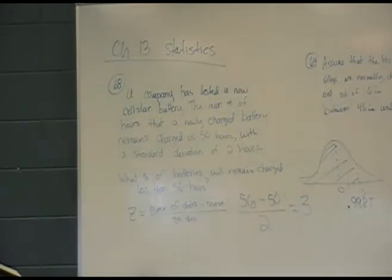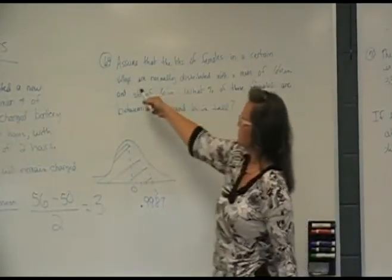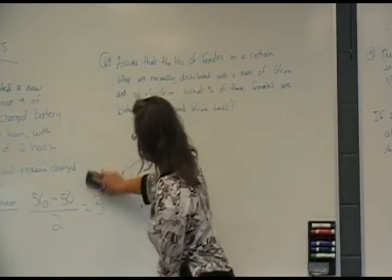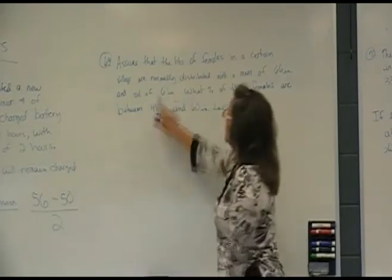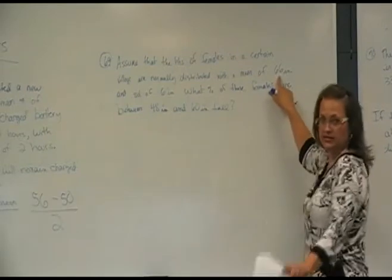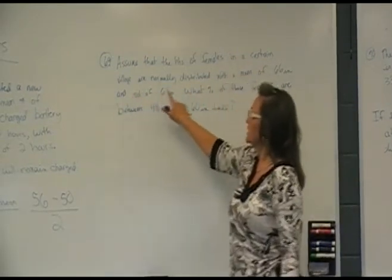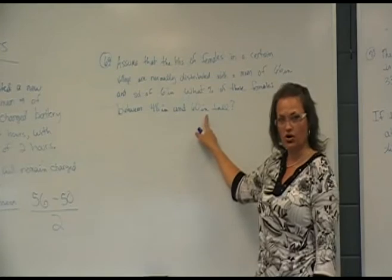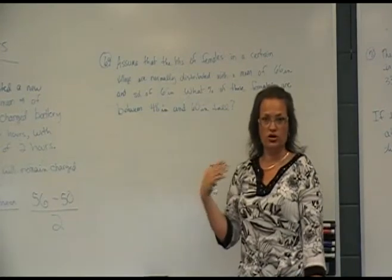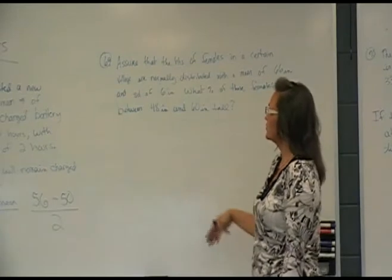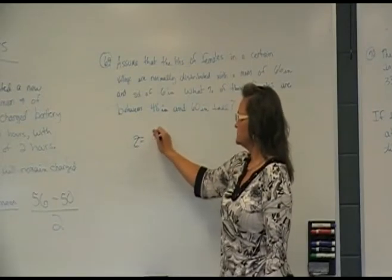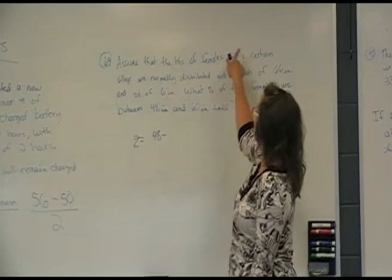Number 69, a similar question. We're talking about the heights of females in a certain village. It says, assume that the heights of females in a certain village are normally distributed. That tells us that we can use this chart, this method, that it should follow along this normal curve. The heights of females normally distributed with a mean of 66. That number will be given to you. And a standard deviation of 6 inches.